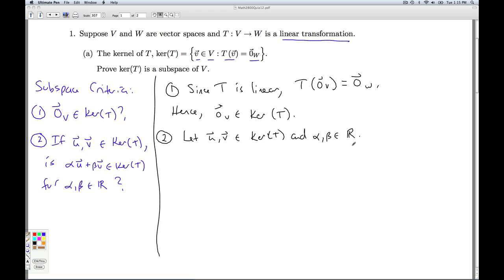What do we have to show? We have to show that this linear combination is in the kernel of T. And what does it mean for something to be in the kernel of T? It means that when I take T of that thing, I'm getting the zero vector in W. Let's write down what it means for these things to be in the kernel of T.